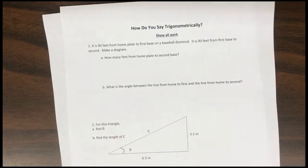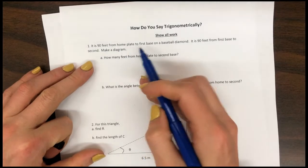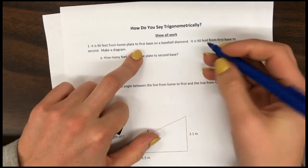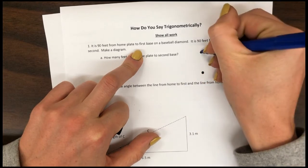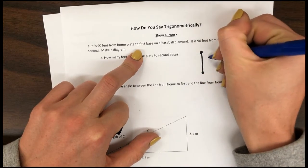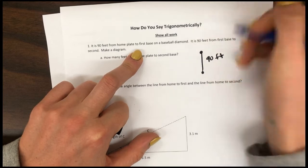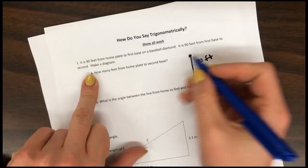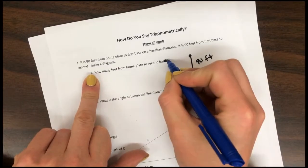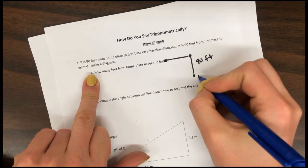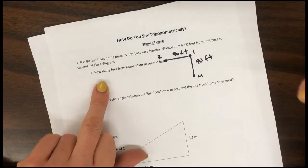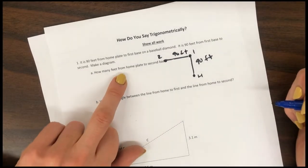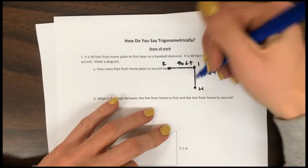All right, so let's go ahead and do this. It is 90 feet from home plate to first base, and it's 90 feet from first base to second base. So if this is home plate, that's first base, and second base is right here — home, first, and second. Make a diagram, done. How many feet from home plate to second base?